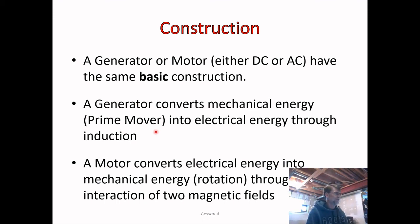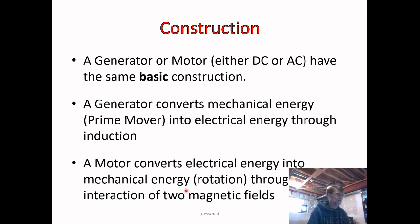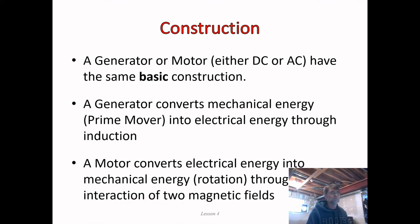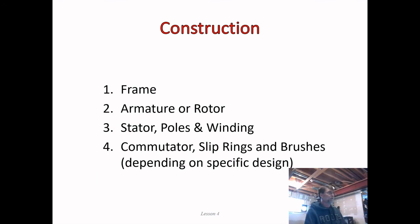The prime mover provides the mechanical energy input into the generator, which we convert into electrical energy through induction. A motor works in reverse: electrical energy is the input, and the output is mechanical energy — rotation — accomplished through the interaction of two magnetic fields that push and pull against each other around the shaft. We're going to look at four parts: the frame, the armature or rotor, the stator with poles and windings, and the commutator, slip rings, and brushes.